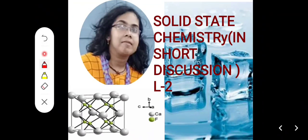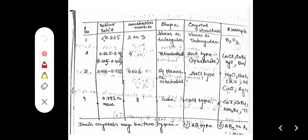Solid state chemistry: relationship between radius ratio, coordination number, shape, crystal structure, and examples. If the radius ratio is less than 0.225, the coordination number is 2 or 3. For coordination number 2, the shape is linear; for 3, the shape is triangular. Crystal structure is similarly linear or triangular. Example: B2O3.